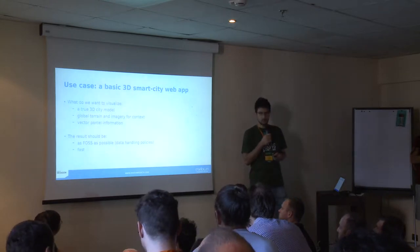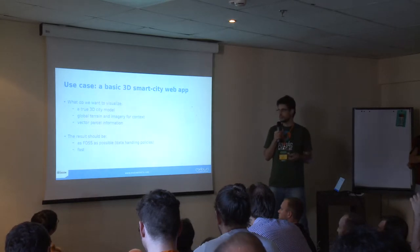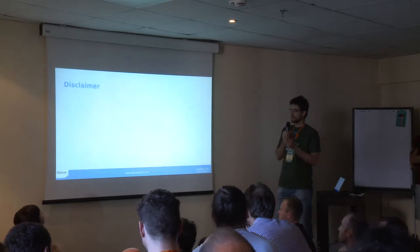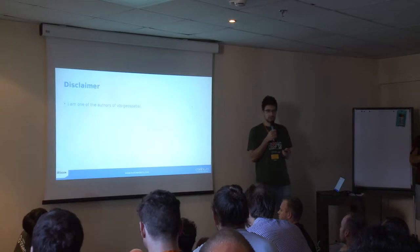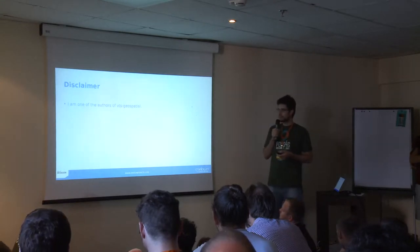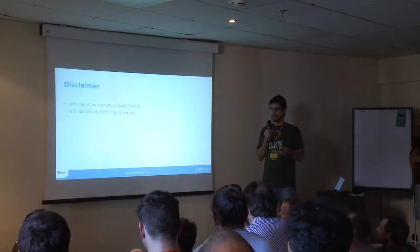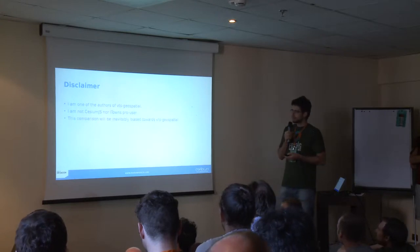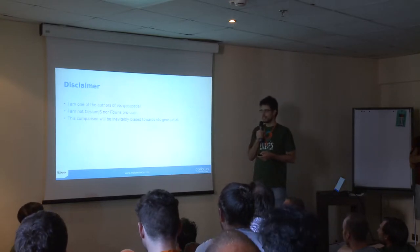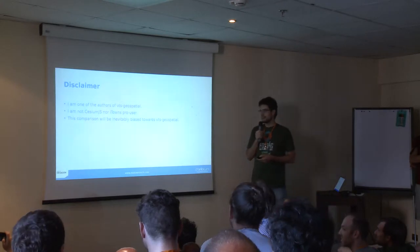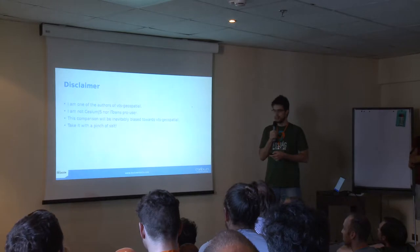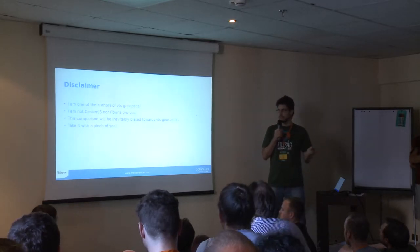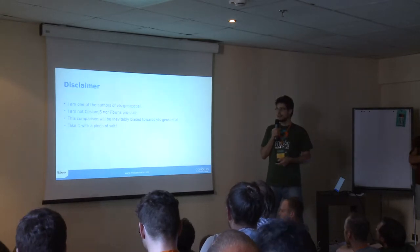The result we attain with the stacks should be as fast as possible, because some of the stacks may have hooks and glitches. Short disclaimer: I'm one of the authors of VTS Geospatial, so there's no way this is not going to be skewed towards VTS Geospatial — just a heads up. I'm not a Cesium.js or iTowns power user, so we just got in with Cesium and tried to do as best as I could. This comparison will inevitably be biased, so take it with a pinch of salt. The entire comparison project is on GitHub with a self-contained web page where you have all the examples in different stacks.